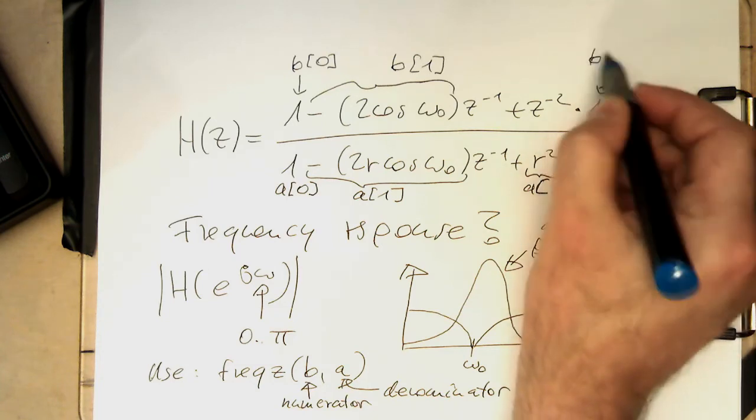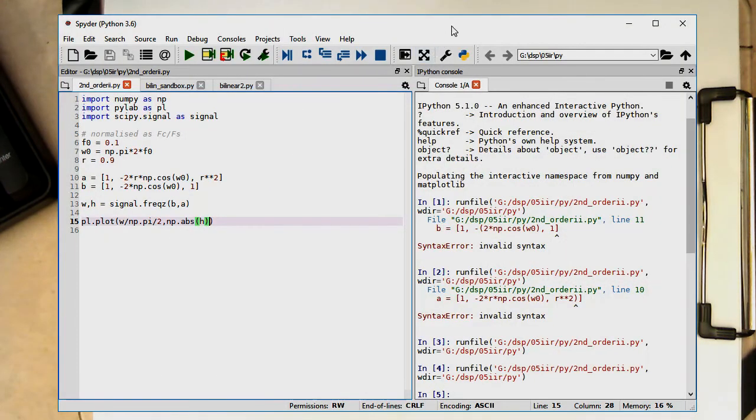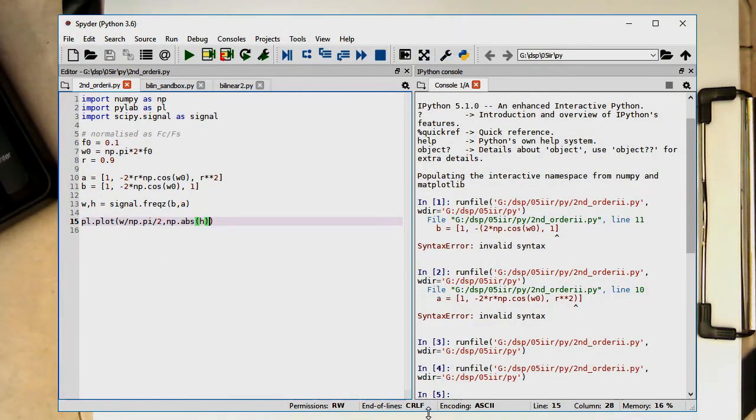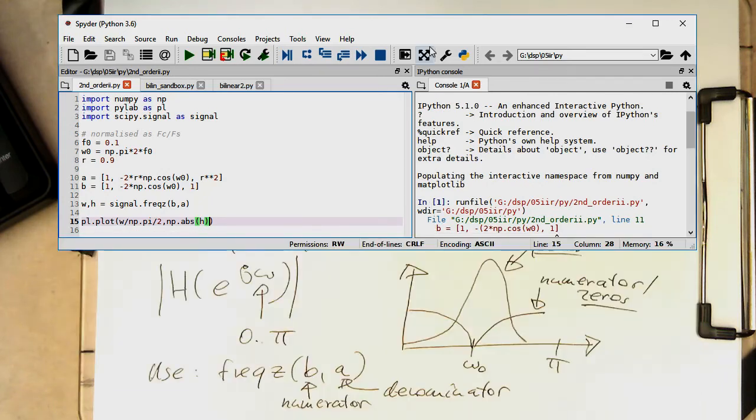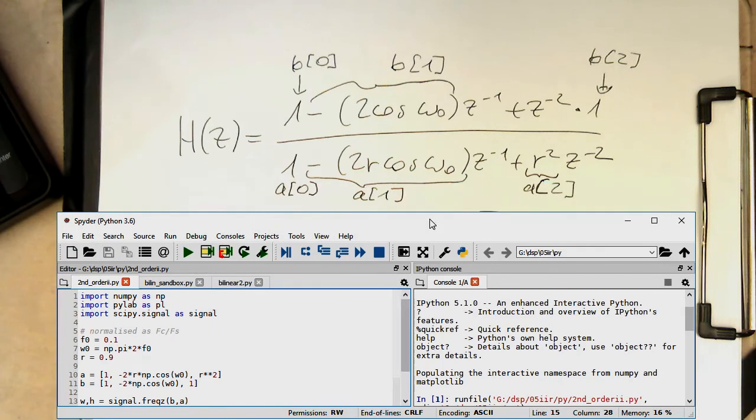And that's here, b of two. And so therefore we just need to substitute that into our code here. So I've already done this here. And we're looking at the values of a and b.